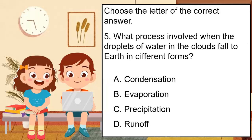What process is involved when the droplets of water in the clouds fall to earth in different forms? A. Condensation. B. Evaporation. C. Precipitation. D. Runoff.